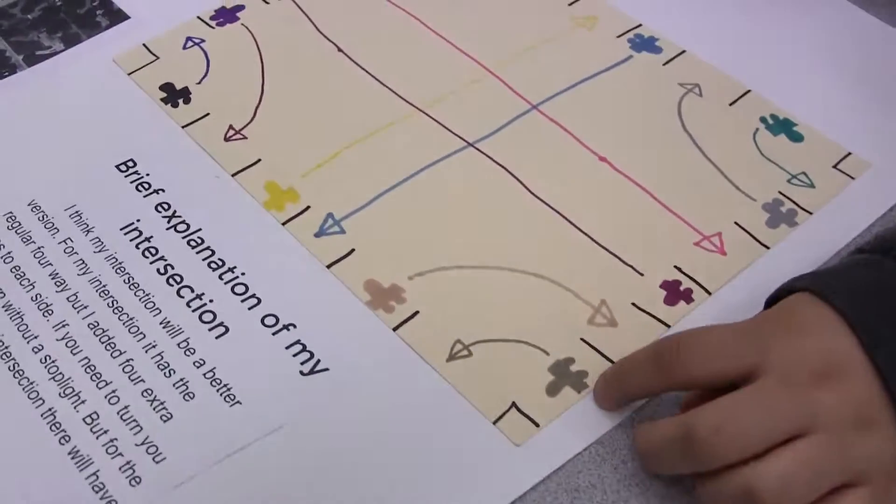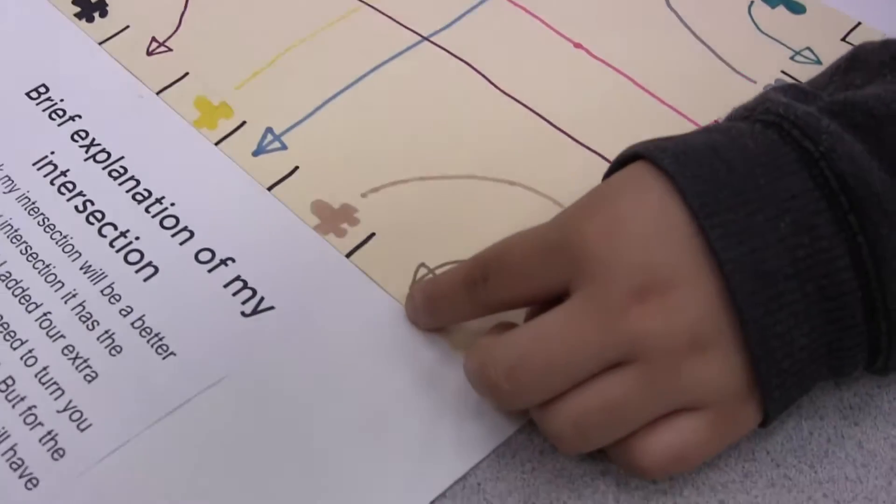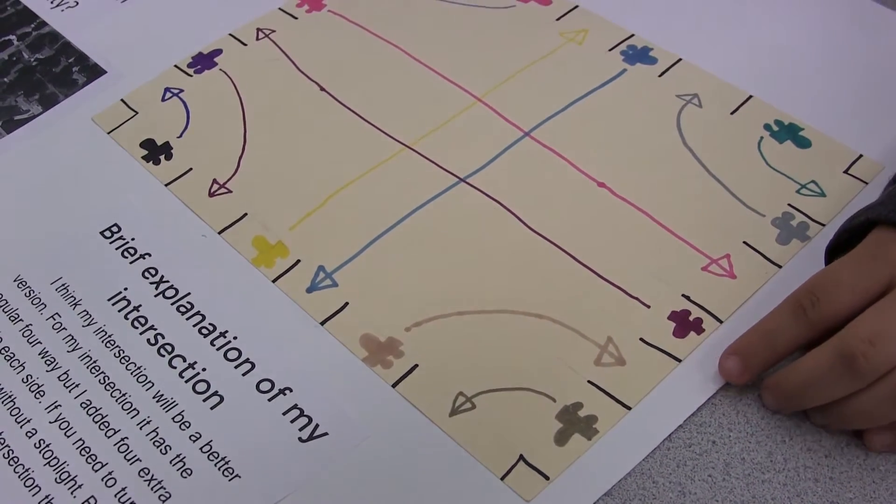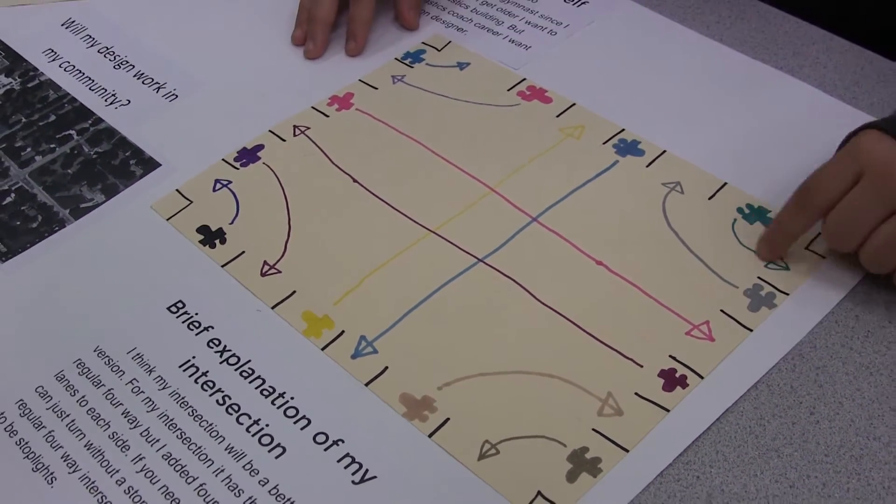My intersection—well I'm keeping the regular intersection with it, but there will be stop lights as usual. But I'm adding two to each side so this car can just turn this way and this car can just go that way without having any stop lights. Oh wow! Okay! For the same ones, and then this car can go that way.